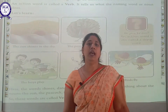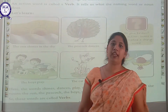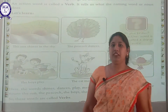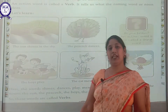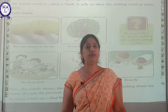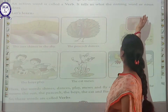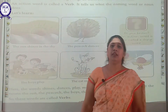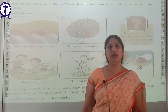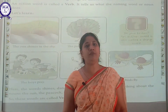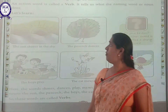So what is a verb? An action word is called a verb. For example, I am teaching you — so teaching is a verb. You are studying — so studying is also a verb. It tells us what the naming word or noun does. A person or an animal — what are they doing? Those doing words are called a verb.